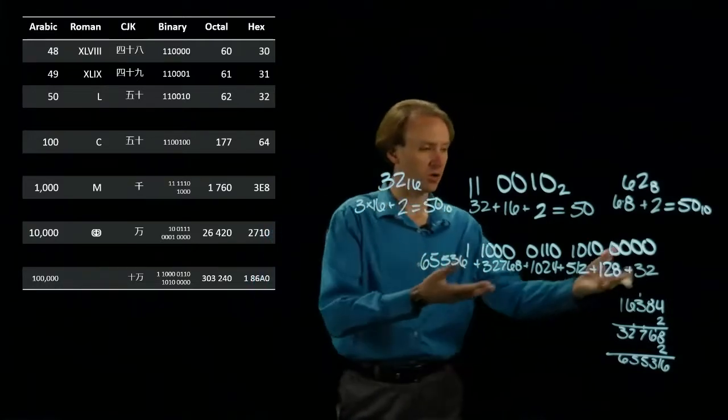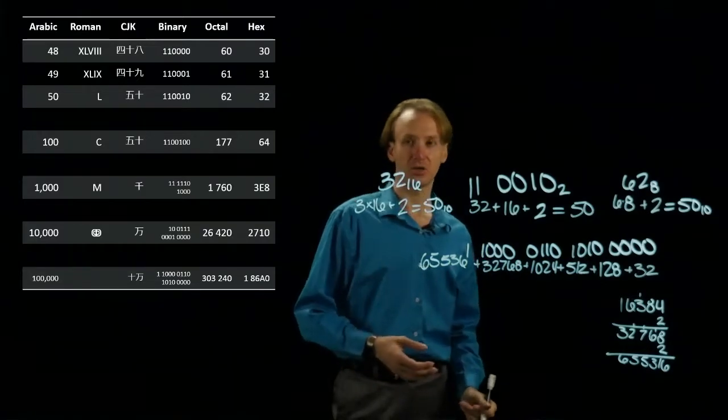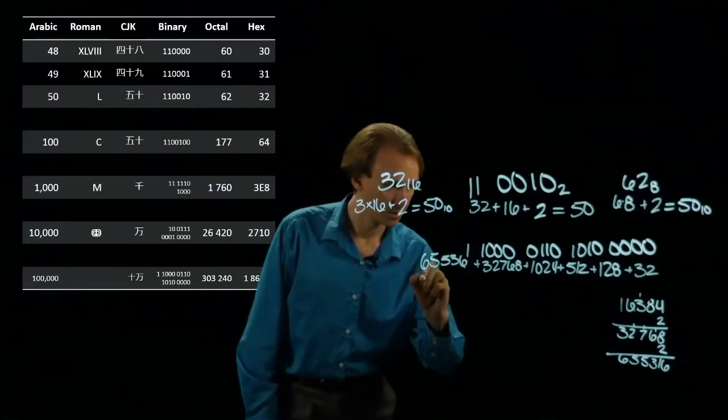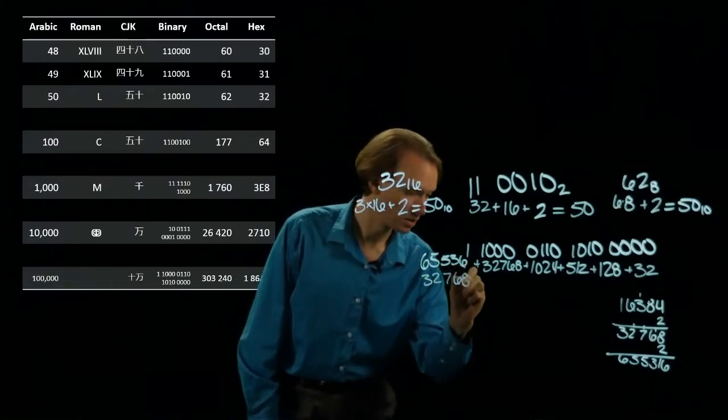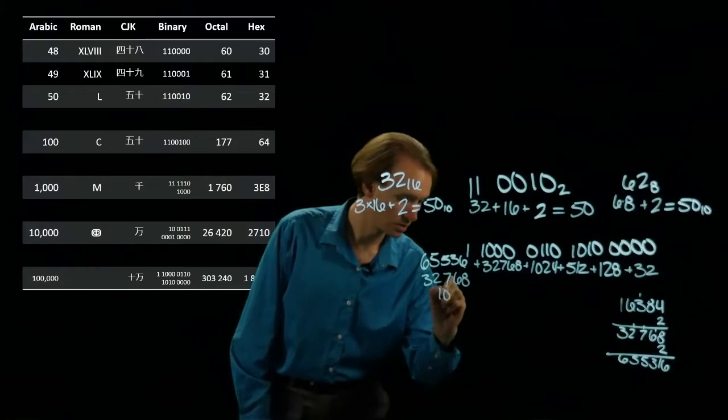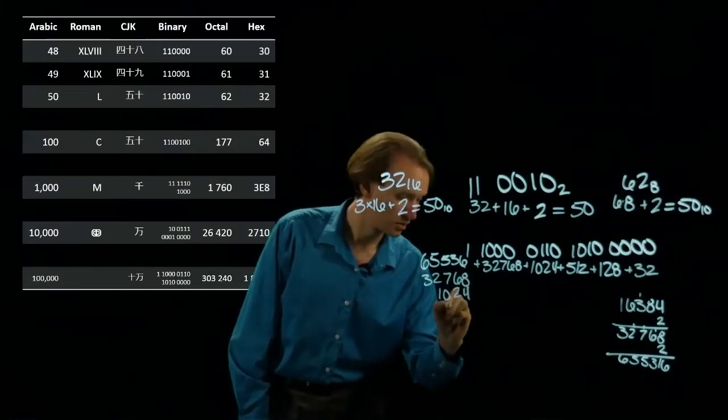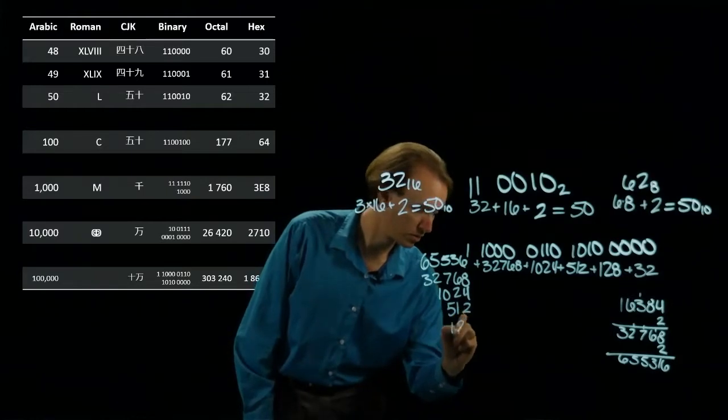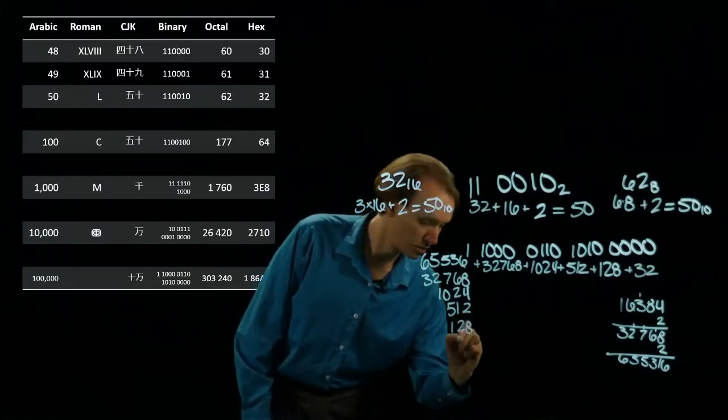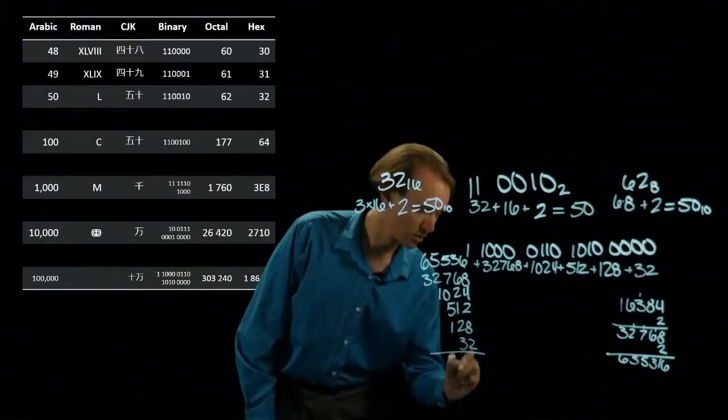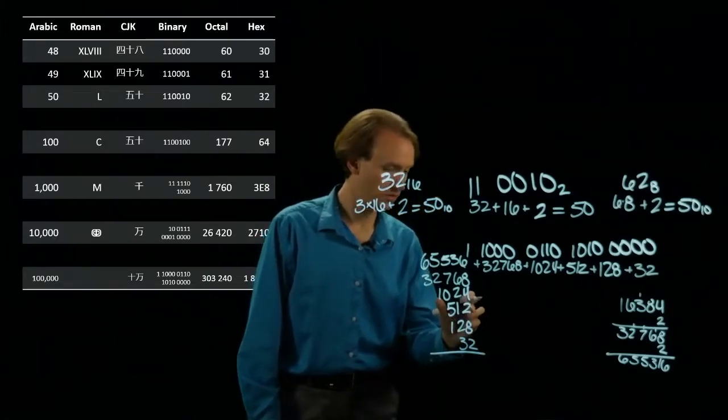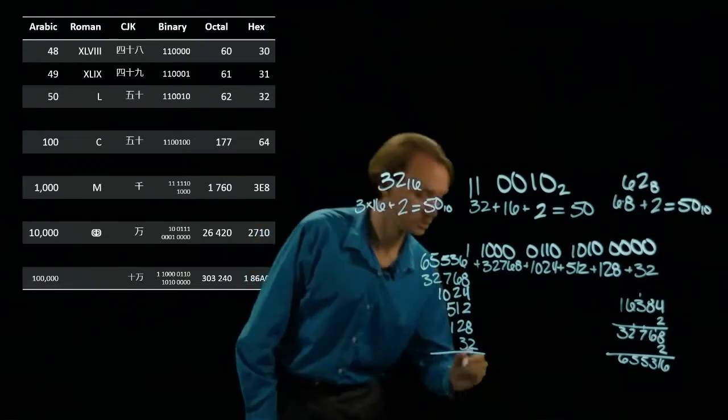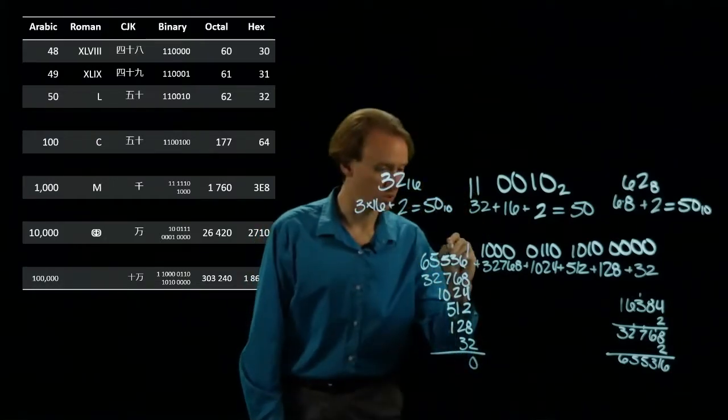So now I'm going to add up all of these numbers and I should come out with 100,000. So 2 plus 8 is 10, 12, 16, 24, 30. So we're off to a good start.